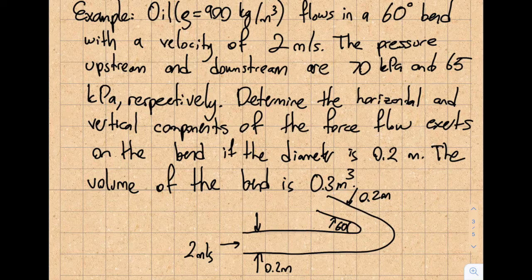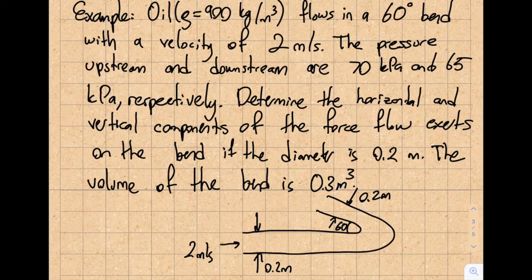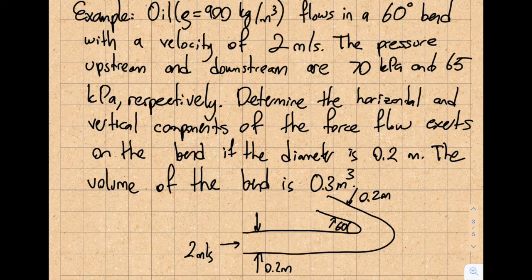Today I'm going to solve a question. The question reads: oil with a density of 900 kg/m³ flows in a 60-degree bend with a velocity of 2 m/s. The pressure upstream and downstream are 70 kPa and 65 kPa respectively. Determine the horizontal and vertical components of the force the flow exerts on the bend. The diameter is 0.2 meters and the volume of the bend is 0.3 m³.